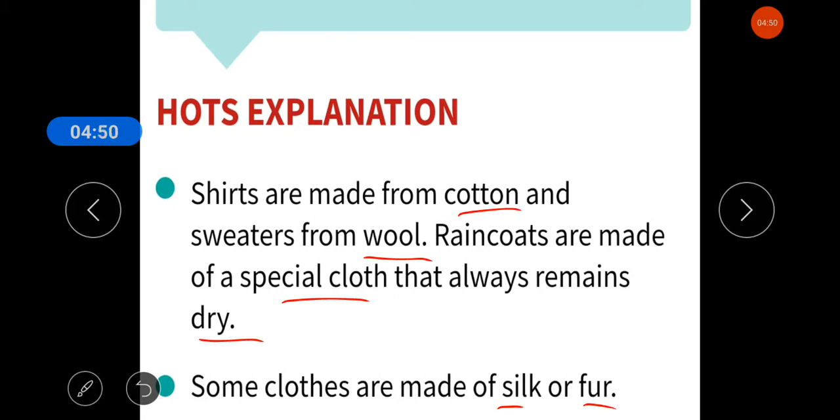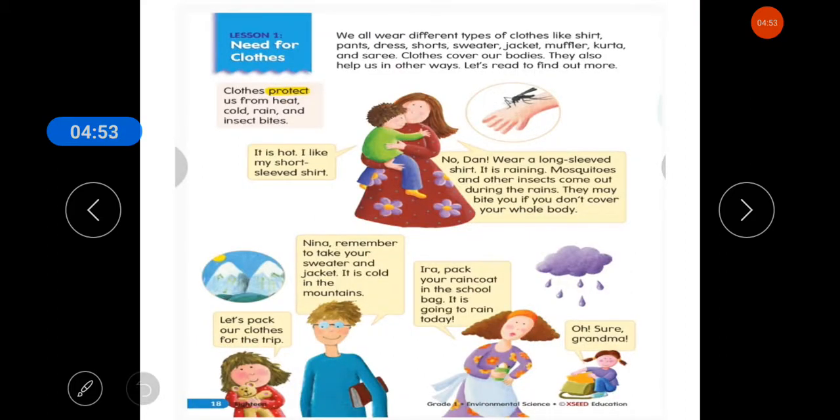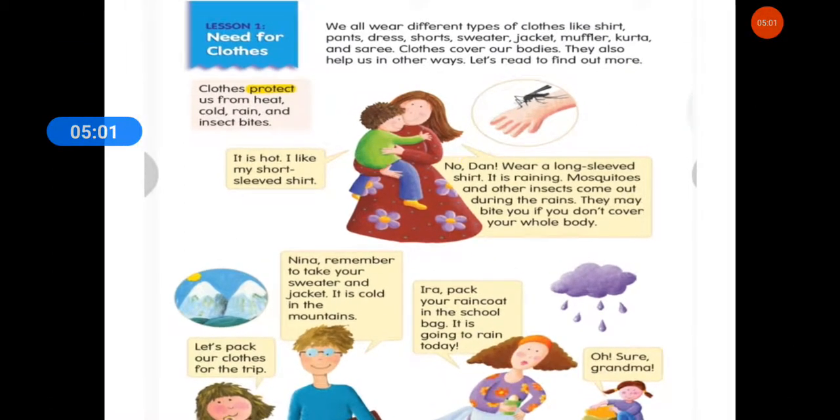Now, students, please check out your EBS content book. Lesson number one of block nine is need for clothes. Let's start reading. We all wear different type of clothes like shirt, pants, dress, shorts and sweaters, jacket, mufflers, kurta and saree. Clothes cover our bodies. They also help us in different, in other ways. Let us read to find out more. Clothes protect us from heat, cold, rain and insect bites.